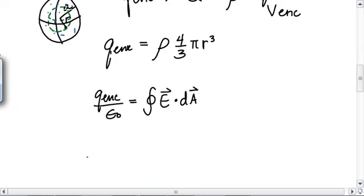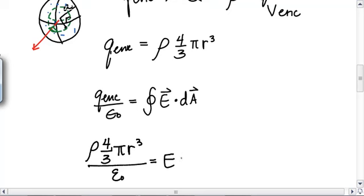So rho times four thirds pi R cubed over epsilon naught is equal to, now the electric field, again, the electric field that's due to the charges inside this surface is pointing that way. And our little bit of Gaussian surface area right there is a little bit of the area of a sphere. And they're all nice and the vectors are perpendicular to each other. So then again, this simplifies to E four pi R squared.